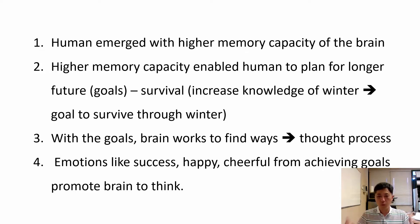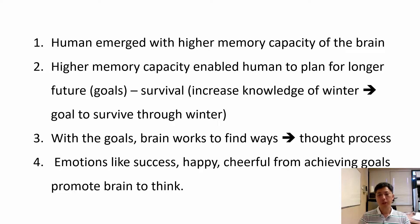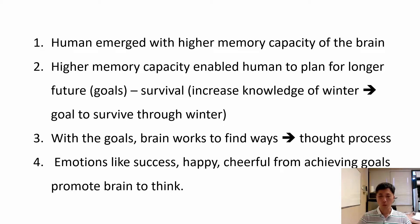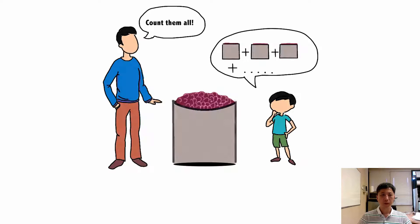For example, a goal like how to get warmer through winter is set, and then the brain starts finding ways to survive. Thought processes are activated this way, and emotions like success or achievement come with it, so the brain can move forward.